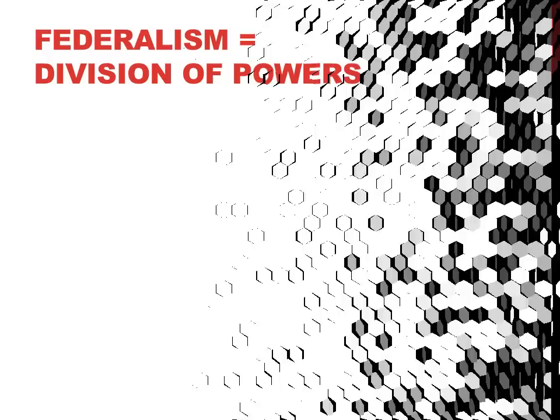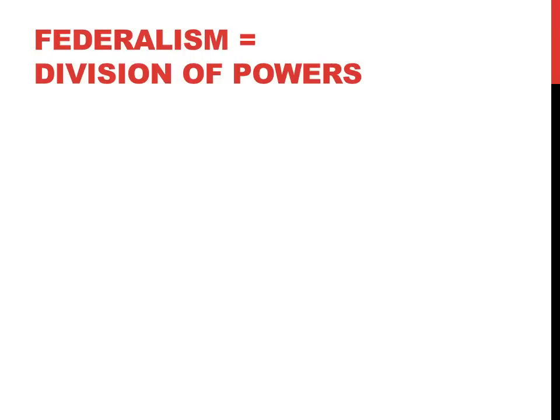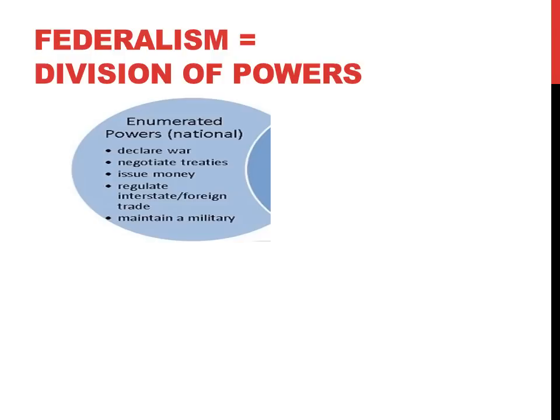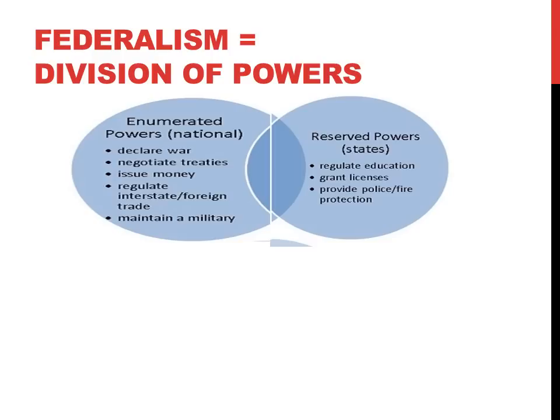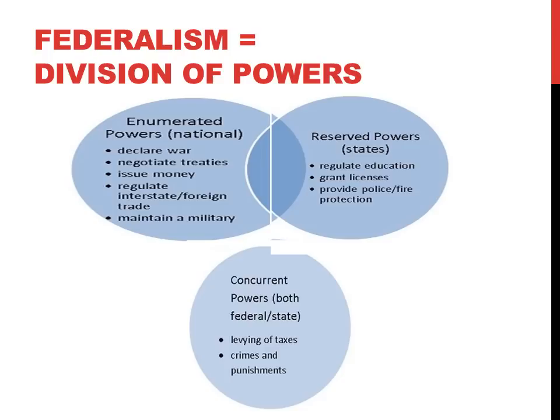The idea of federalism is that each level of government should have its own distinct set of responsibilities. The national government's enumerated or delegated powers include the power to declare war, negotiate treaties, issue money, and regulate trade. The states have what are known as reserved powers — things like regulating education, granting marriage or driver's licenses, and providing police and fire protection. There are also powers shared by both the national and state governments, known as concurrent powers, the most prominent of which is the ability to levy income taxes.